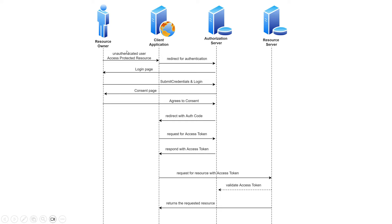From then, the client application can access the resource from the resource server using the access token. So overall: an unauthenticated user tries to access the application, they get redirected to the authorization server, which provides a login page. They submit credentials, get the consent page, agree to the consent, and then the authorization server redirects back to the client application appending the auth code. The client application adds its credentials and sends it back to the authorization server to get the access token. The resource server in turn validates the token with the authorization server, and once everything is good, it returns the response back to the client application.